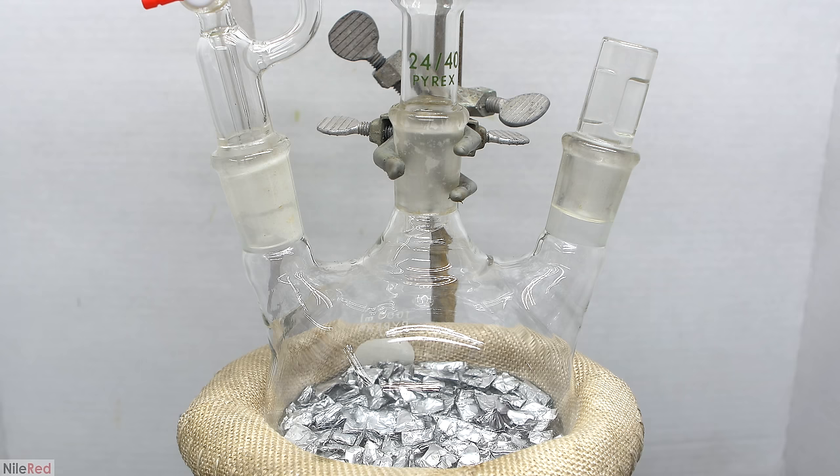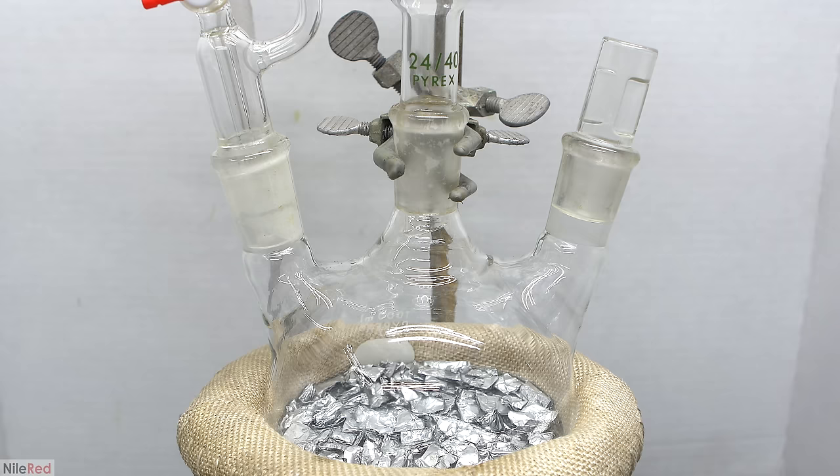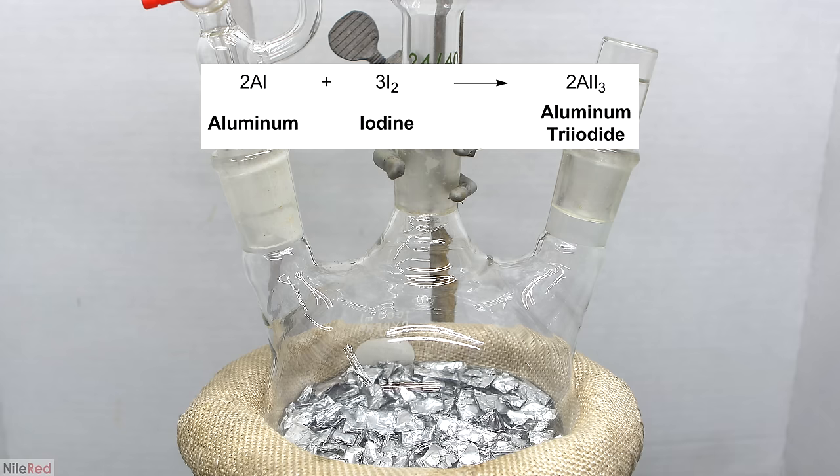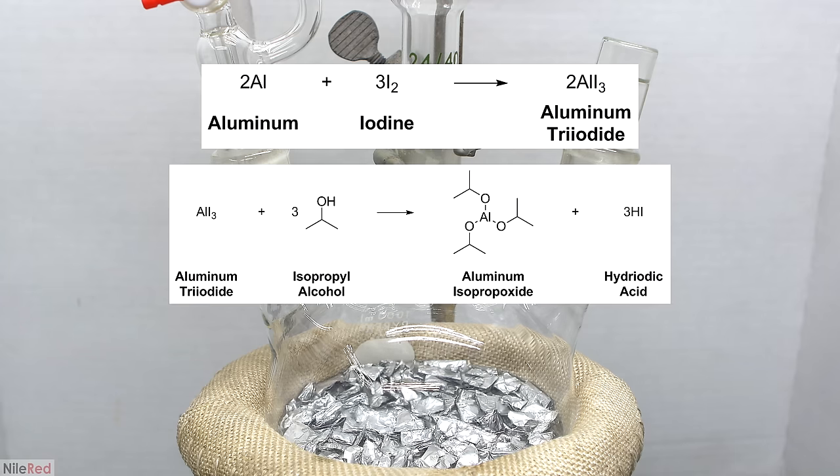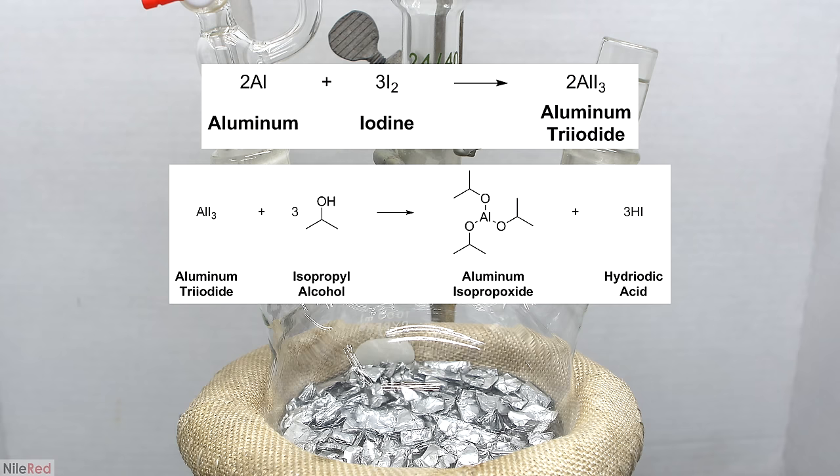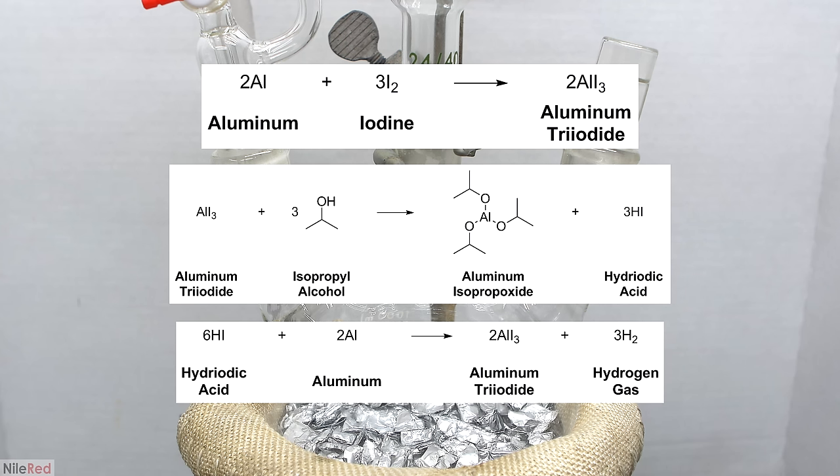The iodine is different because it not only disrupts the oxide layer but also reacts with the aluminum itself. When it reacts with the aluminum, it forms aluminum triiodide, which reacts with isopropanol to produce aluminum isopropoxide and hydroiodic acid. The hydroiodic acid then reacts with aluminum to produce more aluminum triiodide, and the cycle continues.